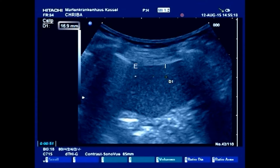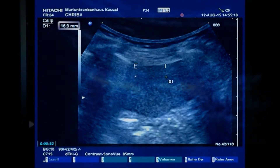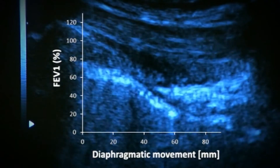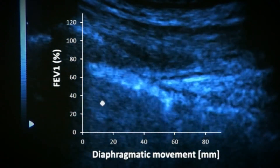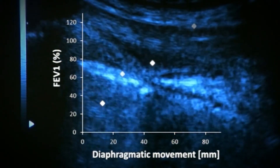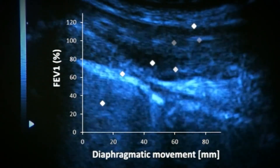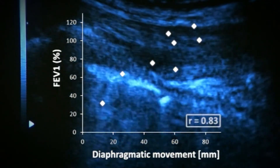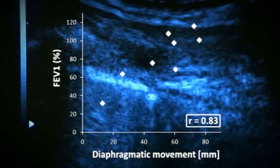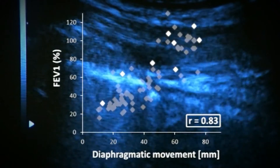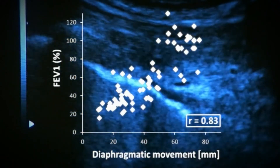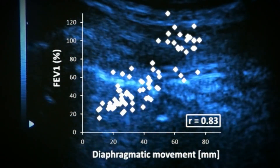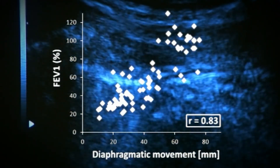We could identify a significant correlation between the demonstrated sonographic measurement of the up and downward movement of the lung silhouette and the FEV1. This method is easy to perform and had produced reliable results in all of the selected 80 patients for the right and the left hemidiaphragms.